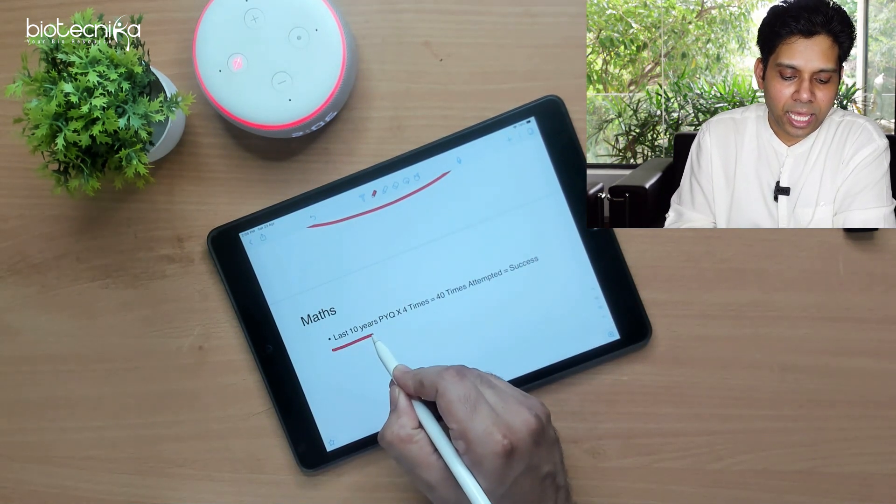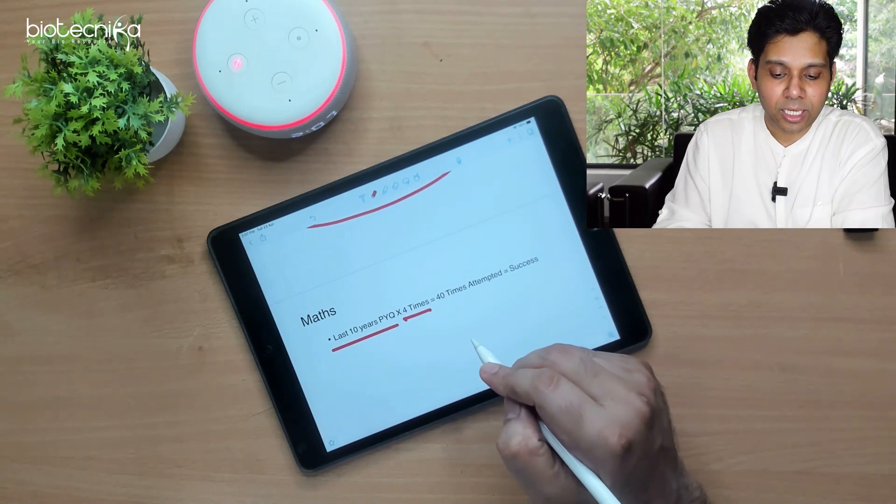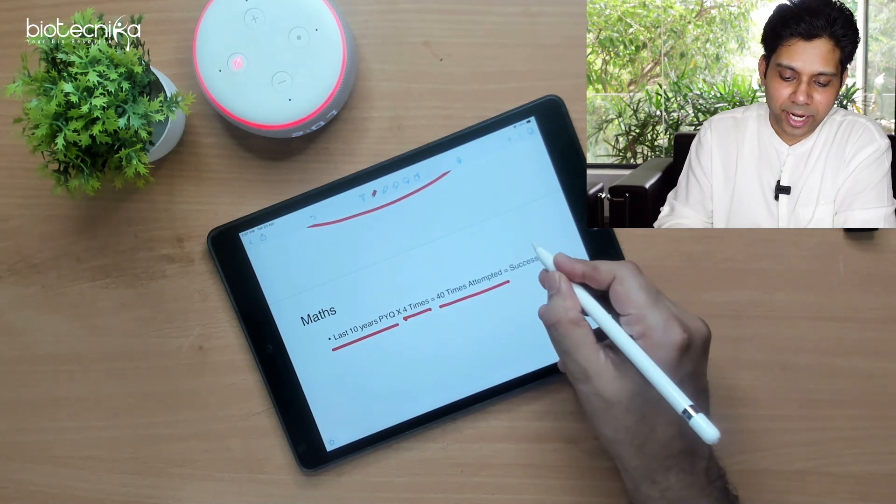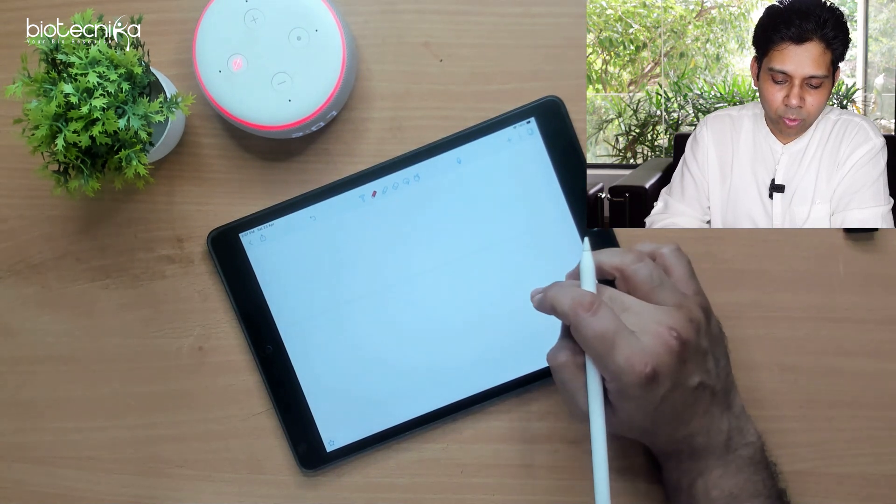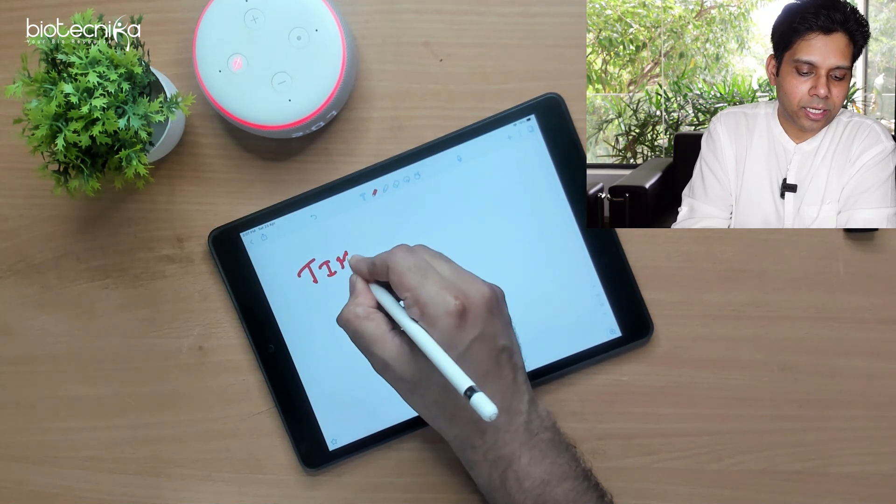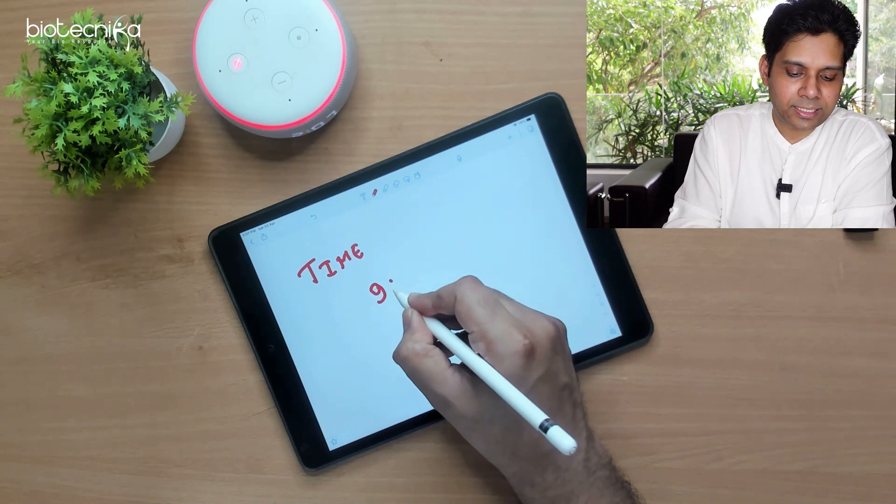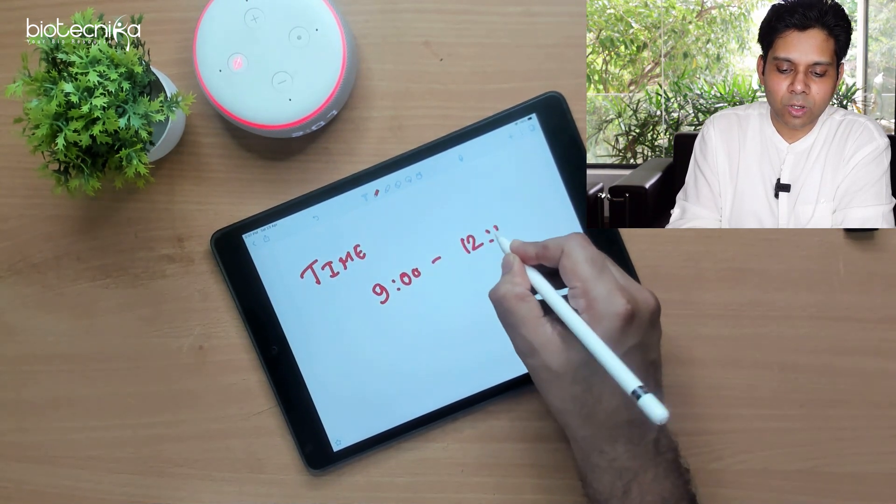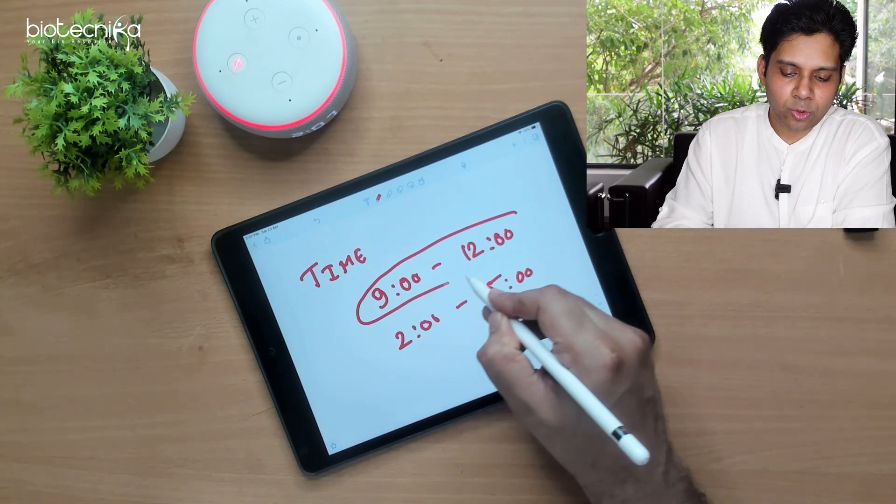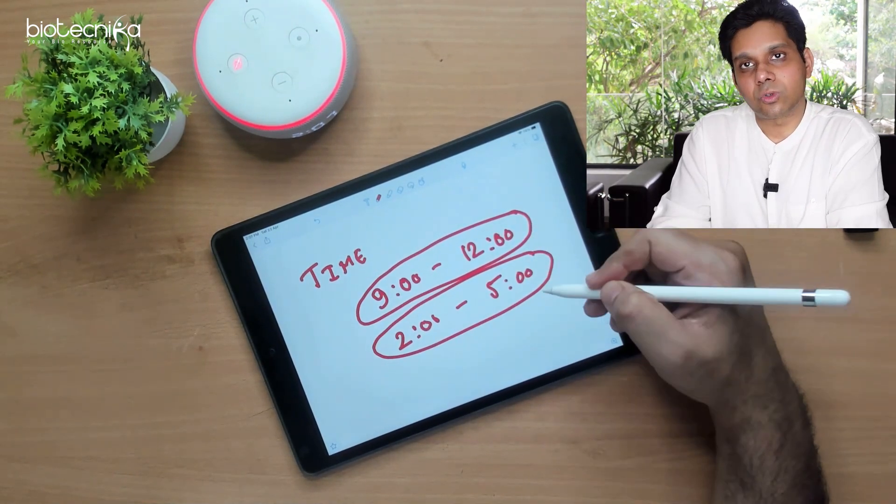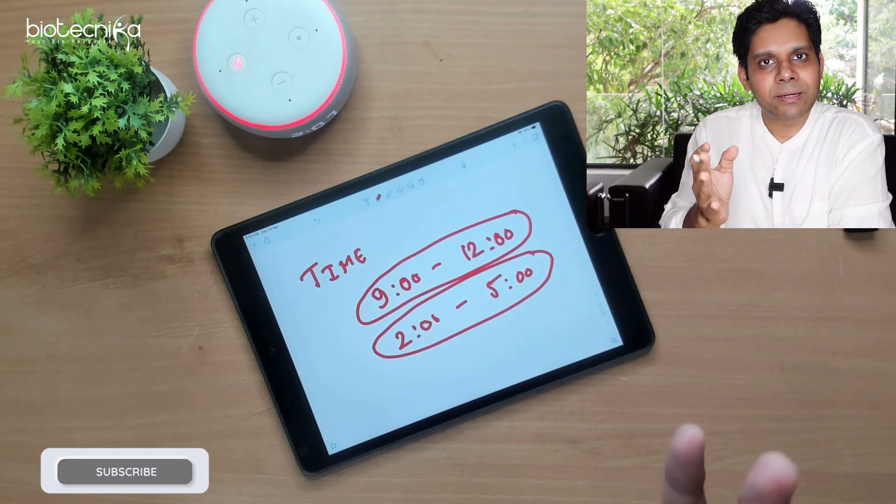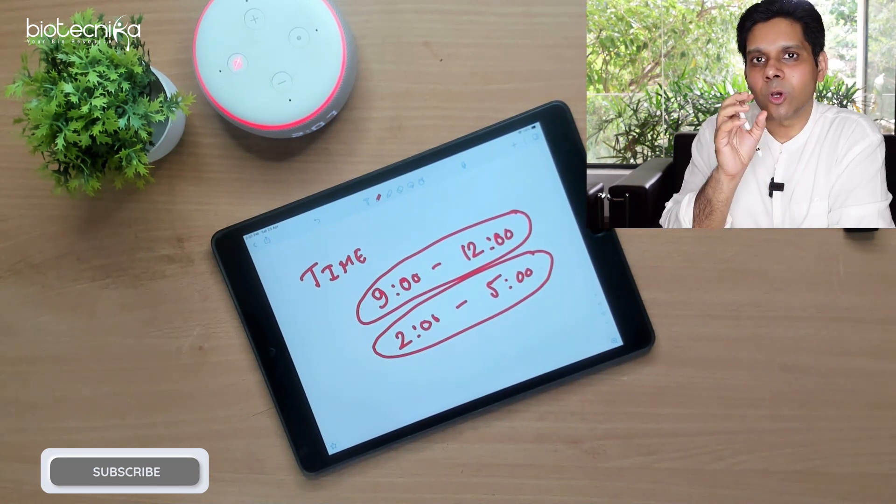You can see here I have written the maths. Last 10 years previous question papers, attempt each question 4 times in your 6 months of preparation. 40 times if you attempt, your practice will be very high and your success will be definitely guaranteed. One more pointer which I would like to highlight here is the time at which you take the test. Generally you should know this, either CSIR keeps the exam in between 9 o'clock to 12 o'clock or it will give you a slot in between 2 to 5.